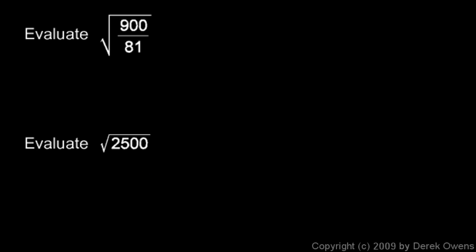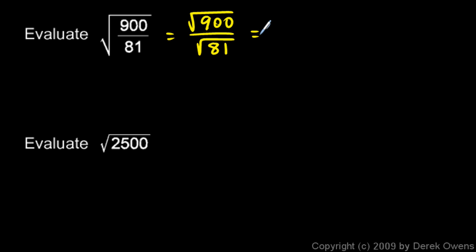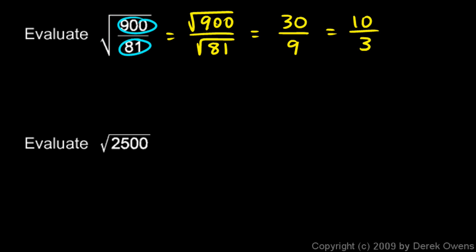These ideas are useful when solving problems like evaluating the square root of 900 over 81. I don't need to do that division in my head — I can break this up into two radicals: the square root of 900 over the square root of 81. The square root of 900 is 30, because 30 times 30 is 900, and the square root of 81 is 9. So I have 30 over 9, which reduces to 10 over 3.